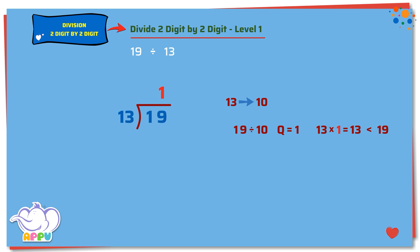Step 2. We multiply 13 and 1, we get 13. Step 3. We subtract 19 minus 13 equals 6. We stop division because 6 is less than 13.